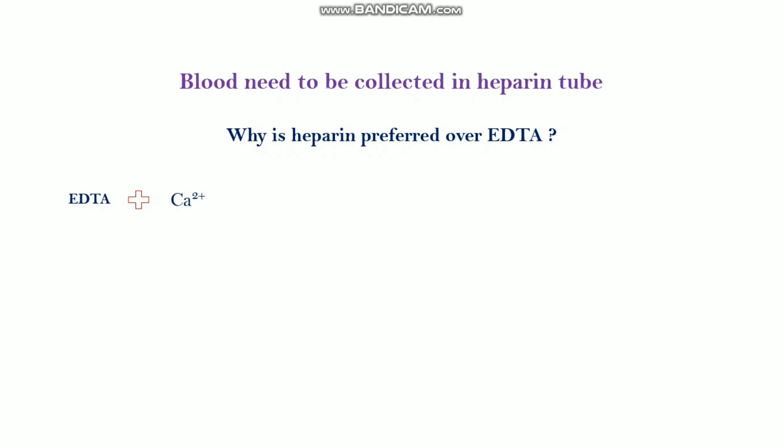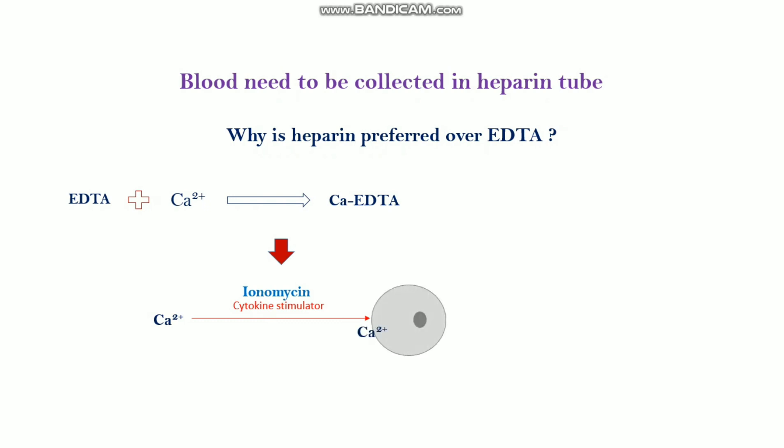EDTA is a chelating agent and it binds with calcium, forming calcium-EDTA. However, calcium is very important for immune cell functions. There is one cytokine stimulator known as ionomycin, which induces calcium transportation into cells. Calcium is important for immune cells for their transcription, cytokine signaling, and other functions. If calcium-EDTA forms, it reduces calcium availability in the cells.